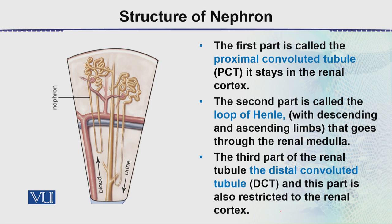The first part is the proximal convoluted tubule, which stays in the renal cortex — the outer region. Both the proximal and distal convoluted tubules are present and lodged in the cortical region. The loop of Henle then moves deep into the medulla.